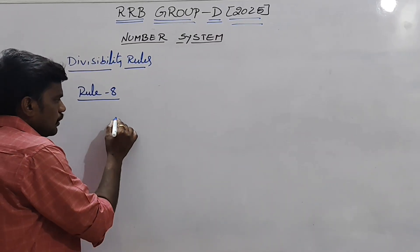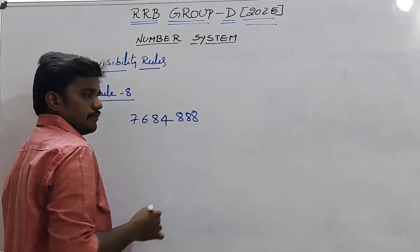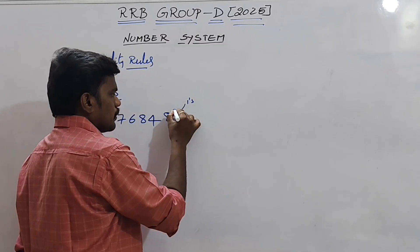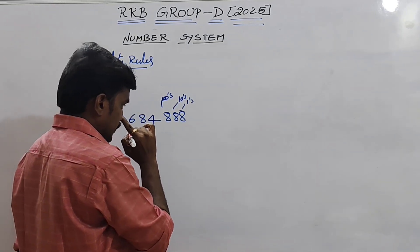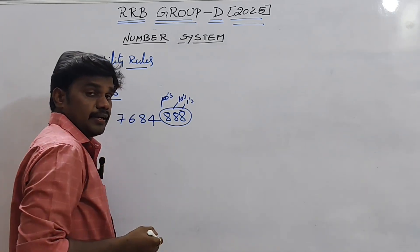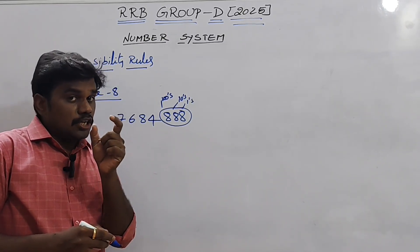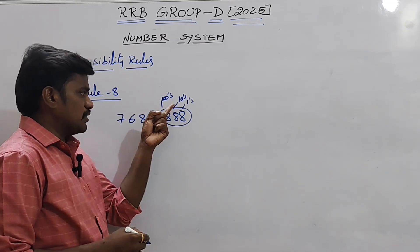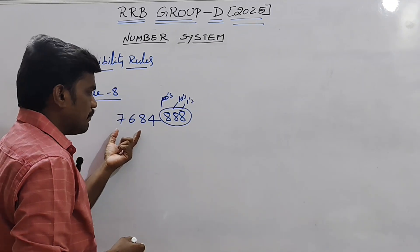Rule number 8: Take the number 7,684,888. In rule number 8, look at the last 3 digits — 1's place, 10's place, and 100's place. If these last 3 digits are divisible by 8, then the entire number is divisible by 8. This is similar to rule 4 which checked the last 2 digits, but rule 8 checks the last 3 digits.